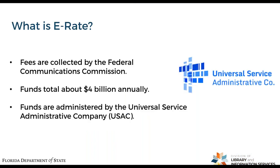We're going to be discussing the E-Rate program today, which is a federal program administered by the Federal Communications Commission, or the FCC. Funds for this come from — if you've ever looked at your cable or cell phone bill and seen assorted fees at the bottom, there is one labeled the Universal Service Administrative Fee. That money goes to a company directly under the purview of the FCC called the Universal Service Administrative Company, or USAC for short.